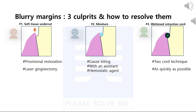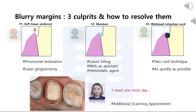Blurry margins, three culprits, and how to resolve them. This is a summary of the three possible causes for blurry margins. The blurry effect introduces uncertainty into the crown manufacturing process and will have a negative impact on the final crown result. Therefore, we must prevent or minimize the blurry effect. If you feel you are having a hard time getting clear margins on the day of crown preparation, there is no need to obsess over doing the scan on the same day — it's totally okay to schedule another appointment for scanning, and you will more easily get accurate data. We hope this video gave you confidence in scanning model-less crowns.